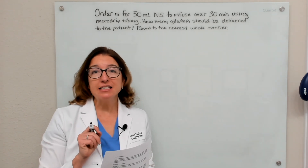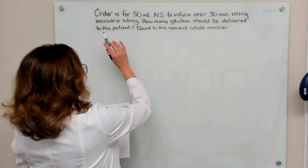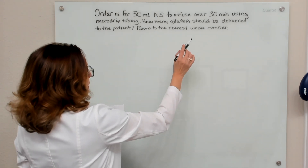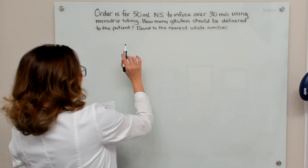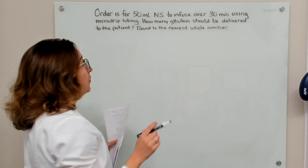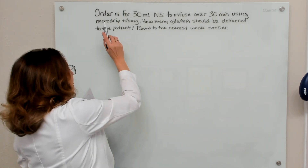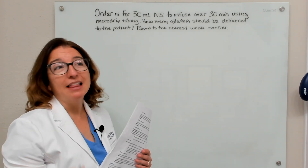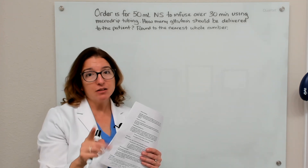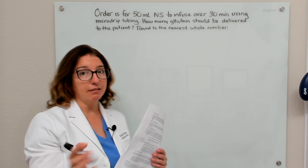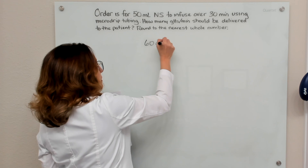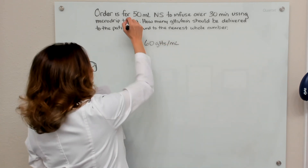Let's work through our next example problem. We have an order for 50 ml of normal saline to infuse over 30 minutes using micro drip tubing. How many drops per minute should be delivered, rounded to the nearest whole number? Notice they told us it's micro drip tubing but did not give a drop factor — you need to memorize that micro drip tubing has a drop factor of 60 drops per ml.